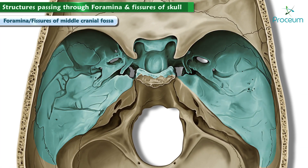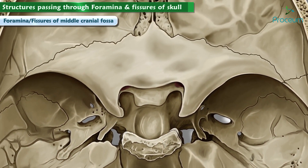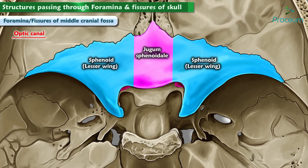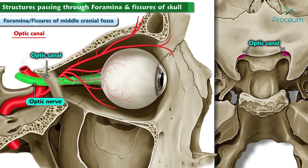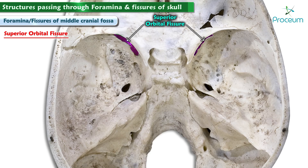There are more foramina seen in the middle cranial fossa in comparison with the anterior or posterior cranial fossa. The optic canal lies within the lesser wing of the sphenoid bone, just anterior and medial to the anterior clinoid process. It allows the ophthalmic artery, which supplies blood to the retina of the eye, and the second cranial nerve, the optic nerve, which sends visual information from the eye to the brain, to pass through.